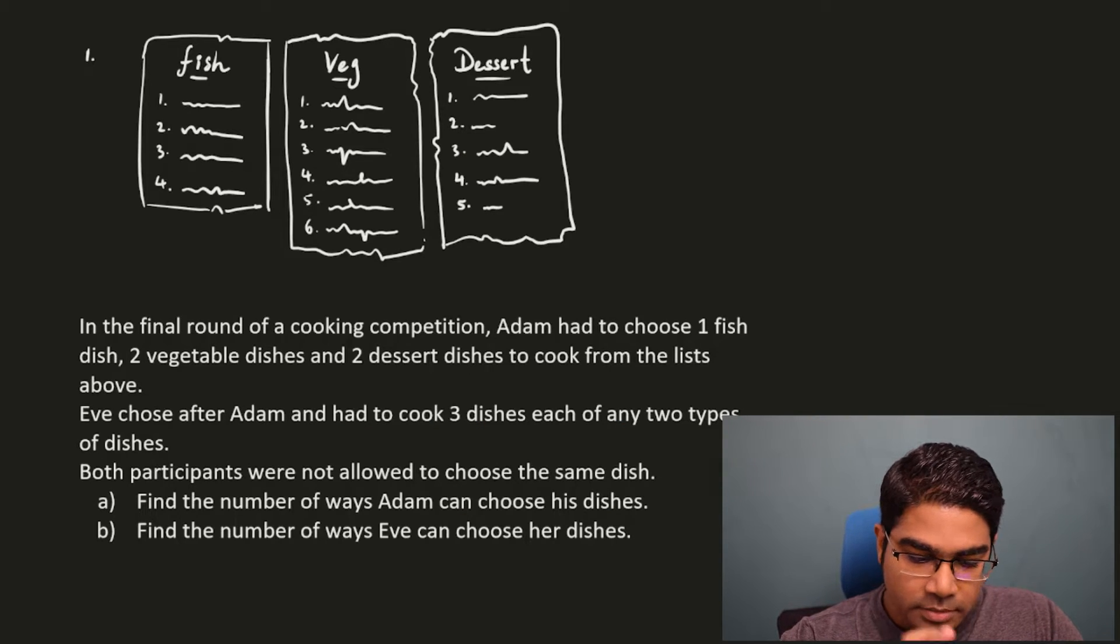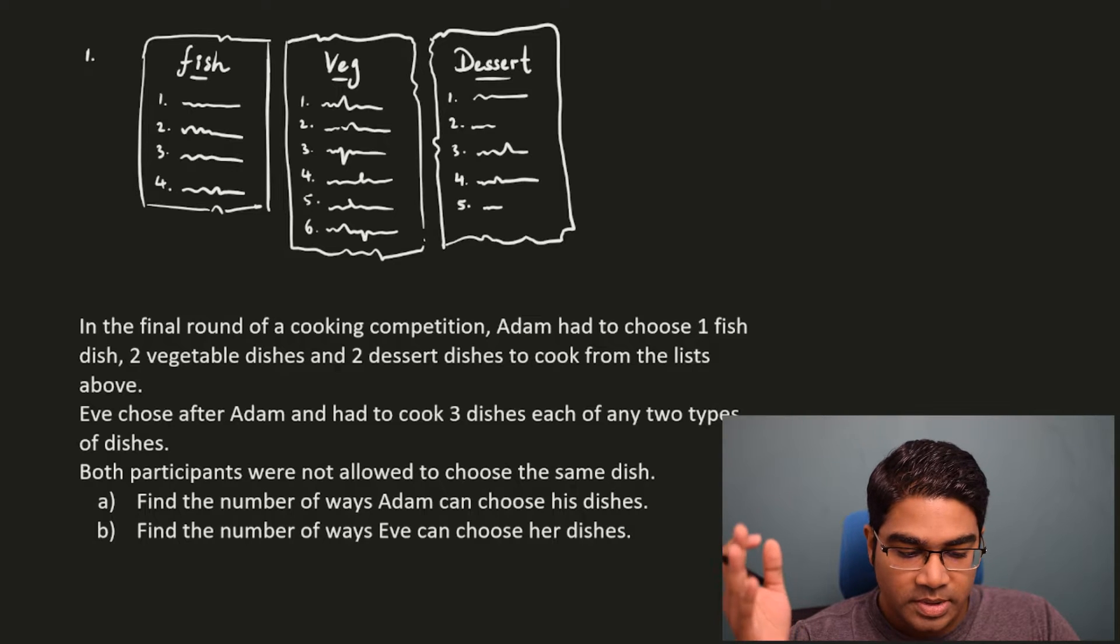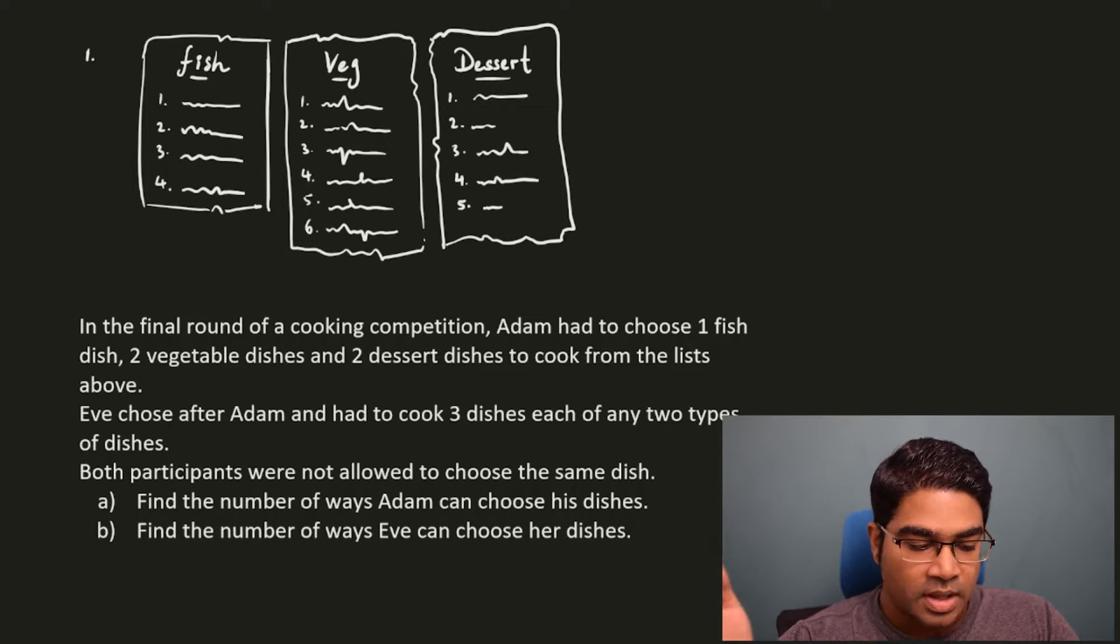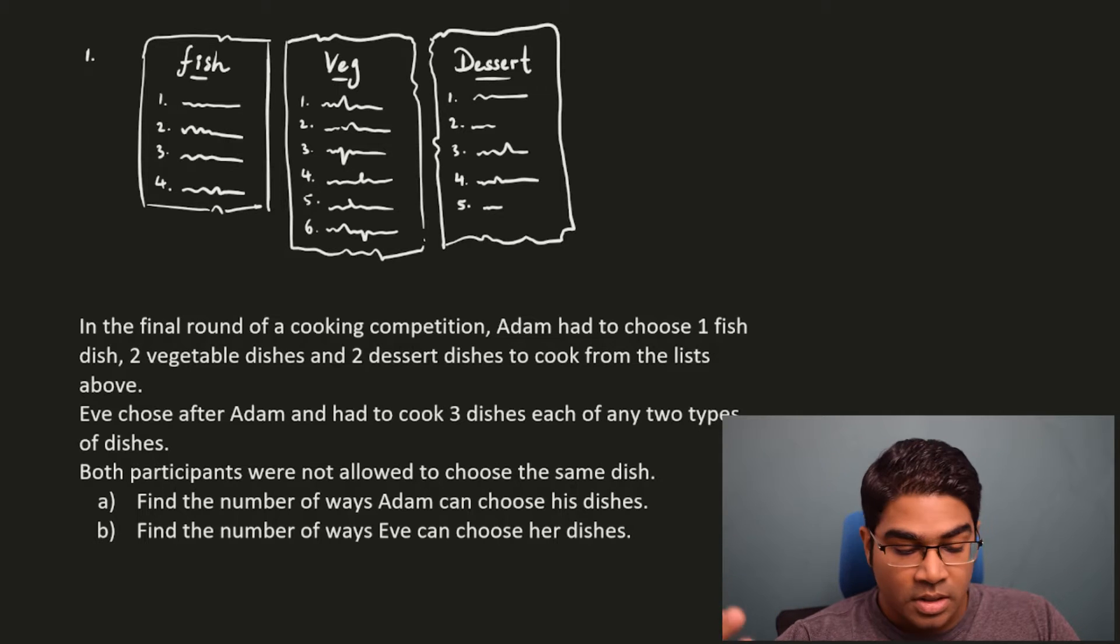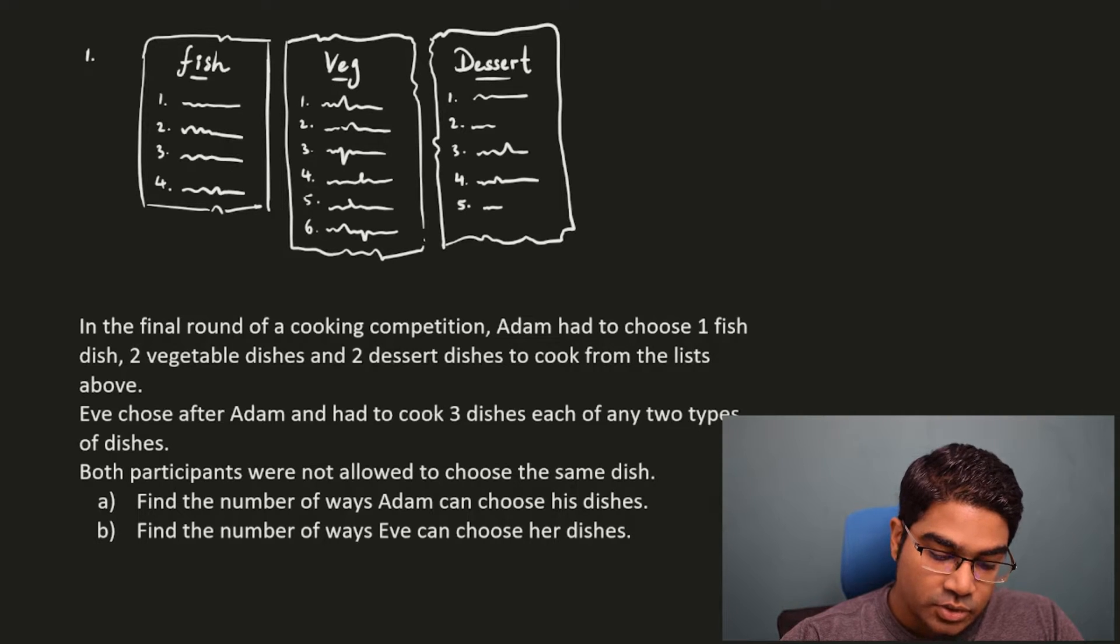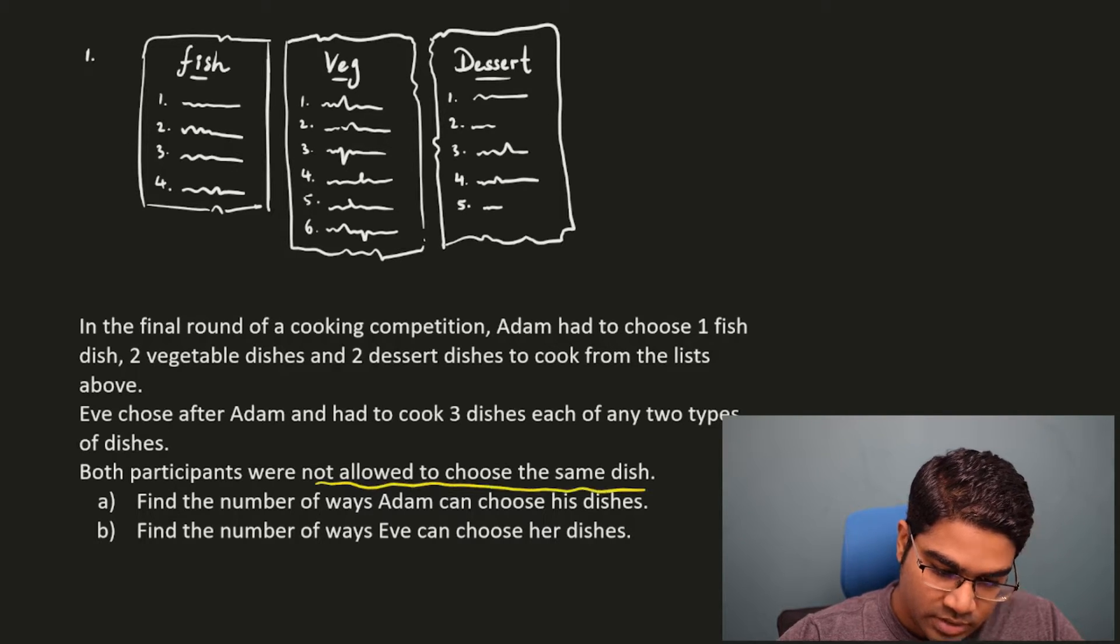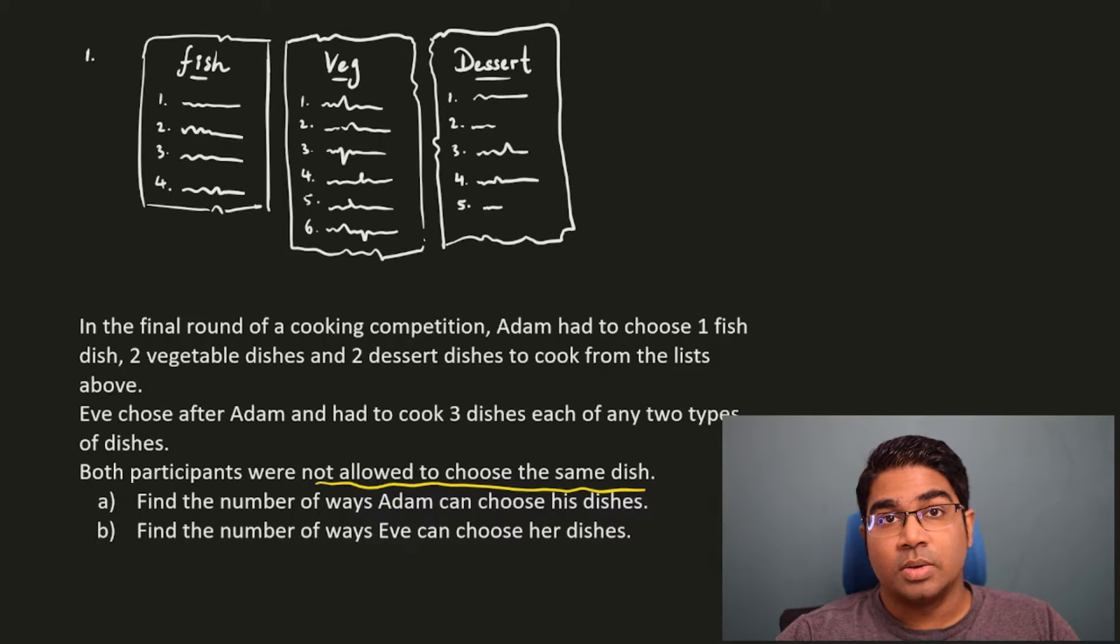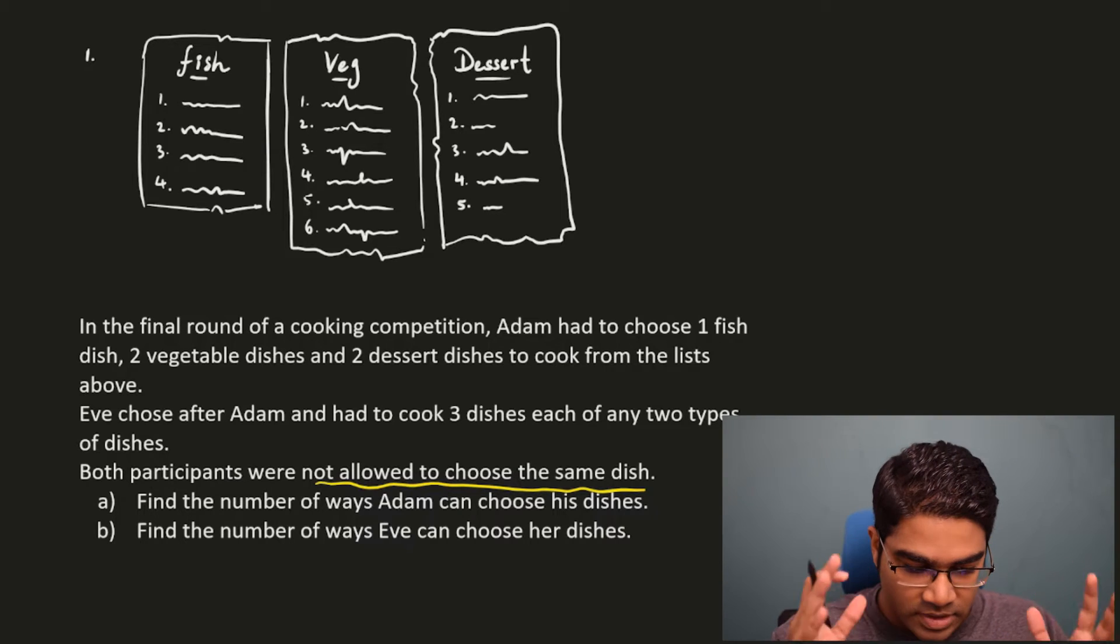In the final round of a cooking competition, Adam had to choose one fish dish, two vegetable dishes, and two dessert dishes to cook from the list above. Eve chose after Adam and had to cook three dishes each of any two types of dishes. Both participants were not allowed to choose the same dish. So there is a condition here, they are not allowed to choose the same dish. So once the choice is made, that cannot be repeated. This is what we have to take away from this question.